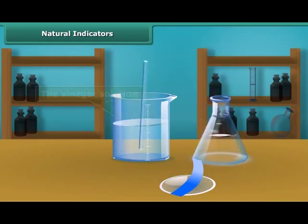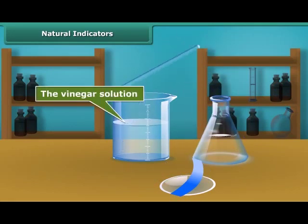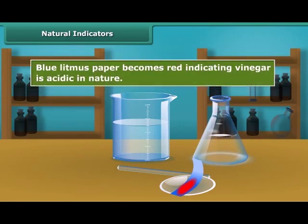Again, dip a clean stirrer into the vinegar solution and put one drop on blue litmus paper. Blue litmus paper becomes red, indicating vinegar is acidic in nature.